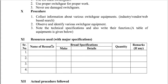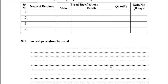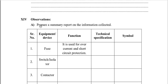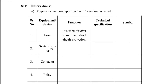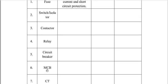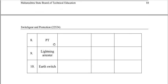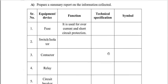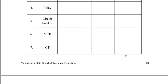Under observations, prepare a summary report of the information collected. For each equipment — such as fuse — write its function (e.g., used for overcurrent and short-circuit protection), technical specification, and draw its symbol. Similarly, follow this process for isolators, contactors, relays, circuit breakers, MCBs, current transformers (CT), potential transformers (PT), lightning arresters, and earth switches. These are the 10 important switch gears for which you must write functions, technical specifications, and draw symbols.